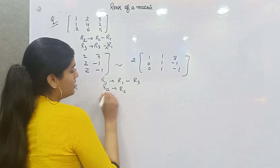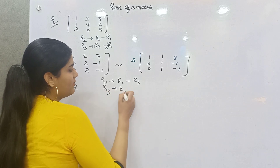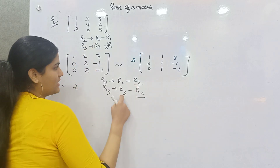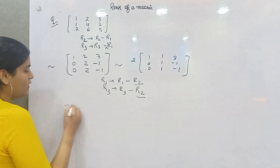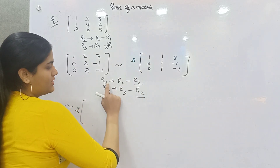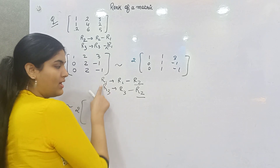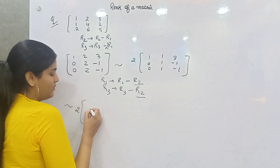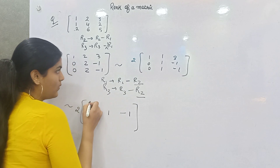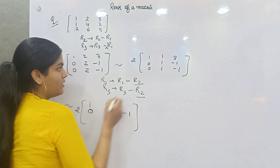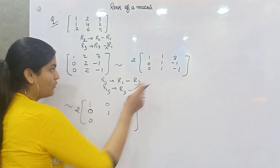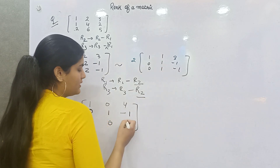Apply R1 → R1 − R3 and R3 → R3 − R2, keeping R2 constant. Moving on: R1 − R2 gives 1−0=1, 1−1=0, 3−(−1)=4. Then R3 − R2: 0−0=0, 1−1=0, −1+1=0.